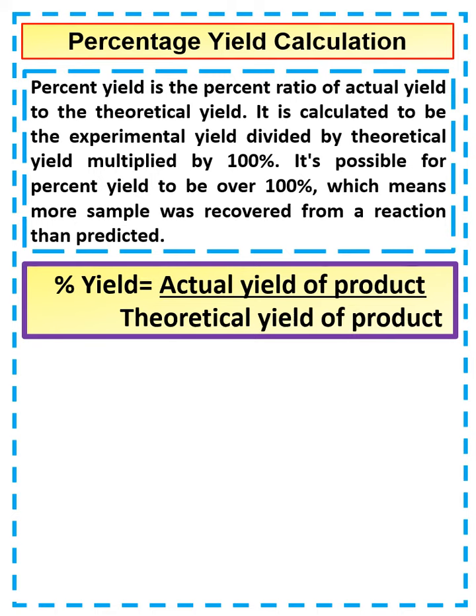Percentage yield is the ratio of the actual yield to the theoretical yield. It's calculated by the actual yield of a product divided by the theoretical yield. Then to turn it into a percentage, we times it by 100.